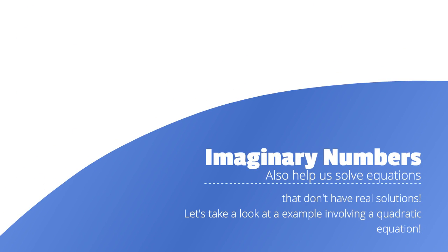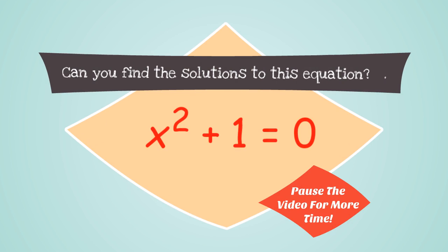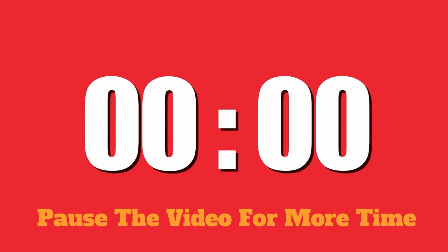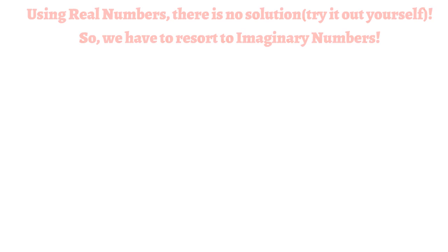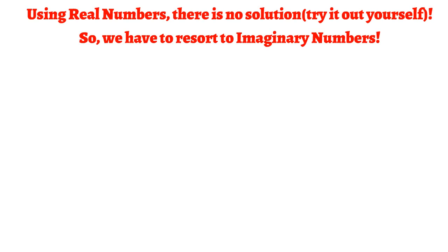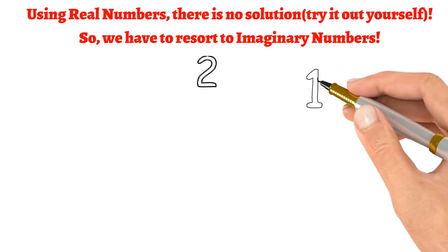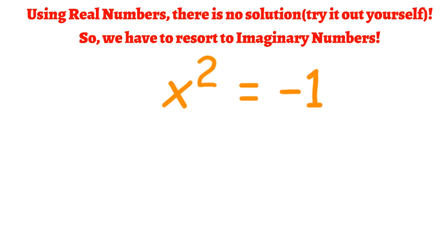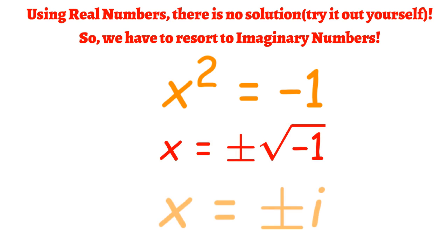So, imaginary numbers also help us solve equations that don't have real solutions. Let's take a look at an example involving a quadratic equation. Can you find the solutions to this equation? x squared plus 1 is equal to 0. Pause the video for more time. Using real numbers, there is no solution. So we have to resort to imaginary numbers. Subtracting 1 from both sides, we get x squared is equal to negative 1. Taking the square root of both sides, we get x is equal to the plus or minus square root of negative 1. The square root of negative 1 is equal to i, so x is equal to plus or minus i.